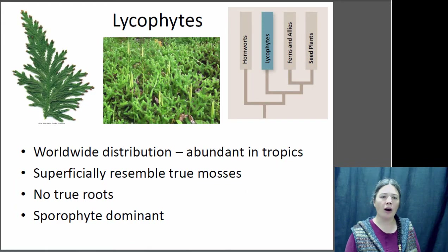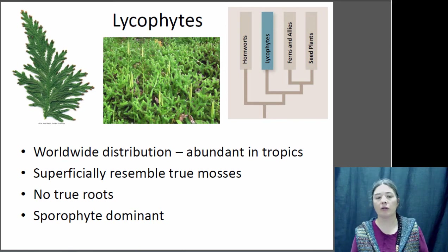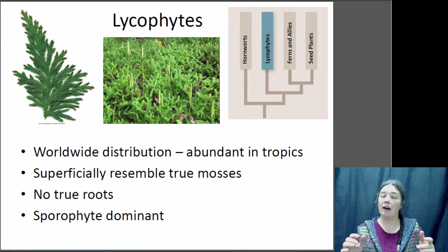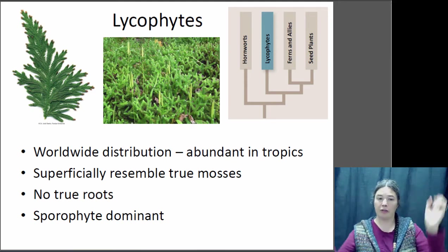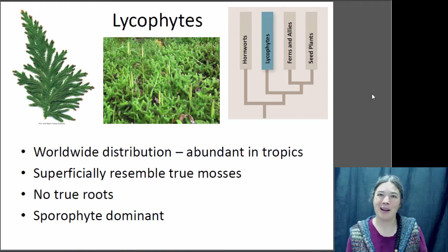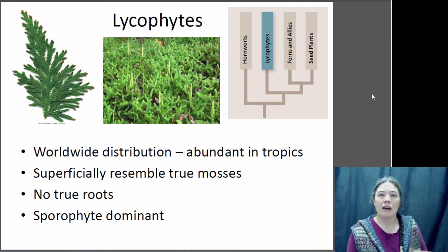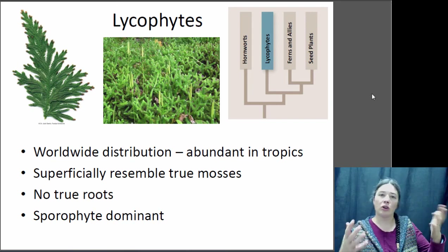Lycophytes are actually relatively common — they've got a worldwide distribution and are particularly abundant in the tropics, though they're also present in places like Canada. They look a lot like a moss, but they do have a vascular system. They produce sporangia and clouds of spores from those sporangia. The spores are actually quite flammable — you can knock them to create a little cloud and if you have a lighter it'll go up in flames. They don't have any true roots, and you're looking at a dominant sporophyte when you look at the plant.